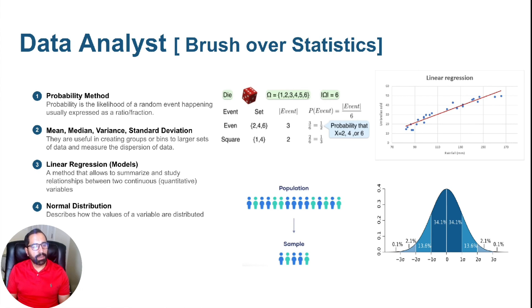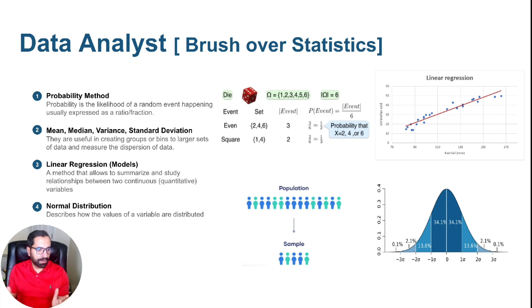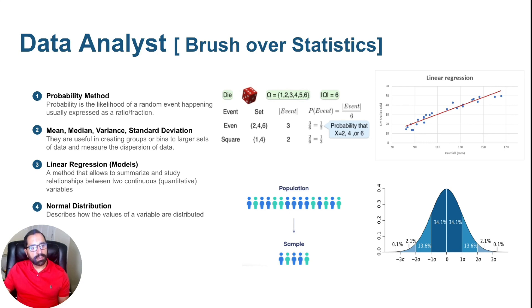For statistics, don't worry too much when starting your career as a data analyst. You need to know summary statistics: probability, mean, median, variance — understanding how data is spread with max and min values. Start with a basic linear regression model, which is easier to understand, and also understand how data is distributed over a normal distribution — that's the bell curve shown here. These are the statistics areas that matter because you can apply them to raw data to get an idea of where the data is going.